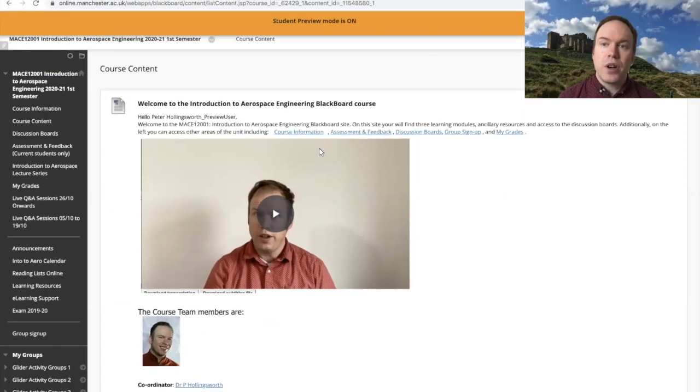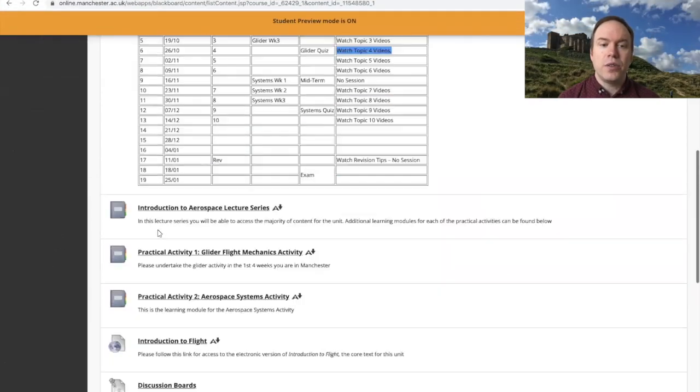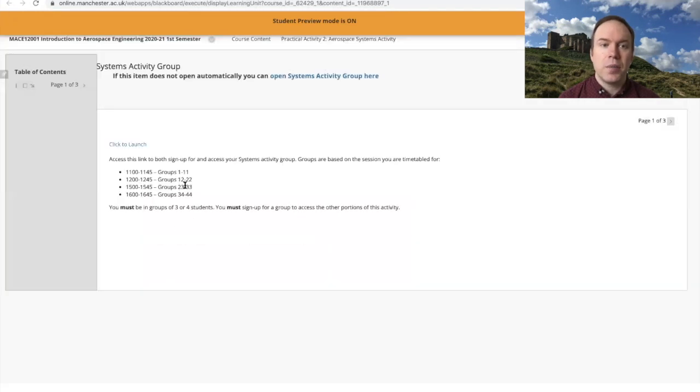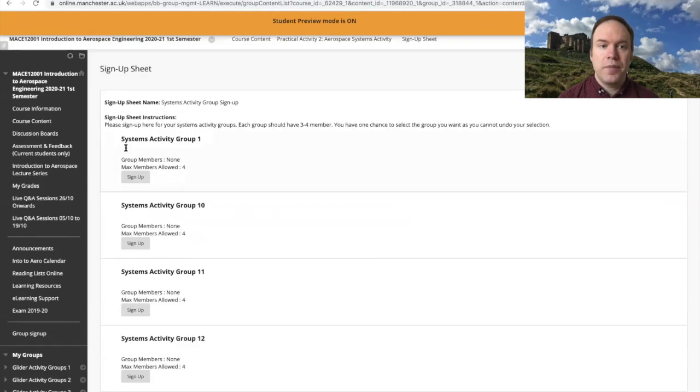In order to sign up and access the source material, you must do two things. We start on the home page and we go to the Practical Activity Aerospace Systems Activity learning module. We can sign up for a group. Click to launch here and then choose your group. I will choose Systems Group 1 as an example.